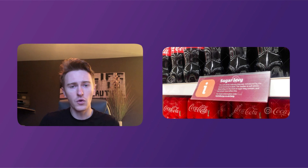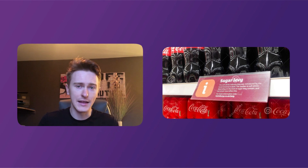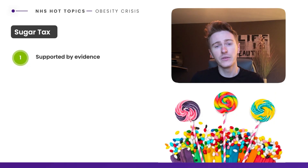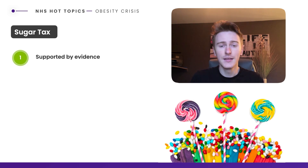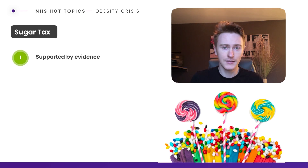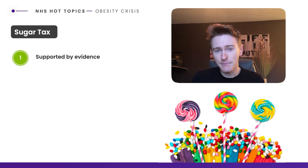As a result of all those dangers, the government wanted to introduce a sugar tax, or what's called a soft drinks industry levy. The first key fact is that this levy was immediately supported by evidence — it's not just a whimsical policy. In 2013 the BMJ ran a study that said introducing a 20% tax on soft sugary drinks would reduce obesity in the UK by 1.3%, which is a massive amount.